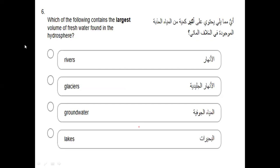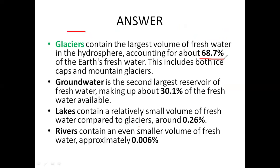Which of the following contains the largest volume of fresh water? Rivers are extended parts fed by glaciers; groundwater is limited; lakes are what's left from rivers. Glaciers hold the largest volume of fresh water. The quantities to remember: glaciers 68.7%, groundwater 30.1%, lakes 0.6%, and rivers 0.006%.